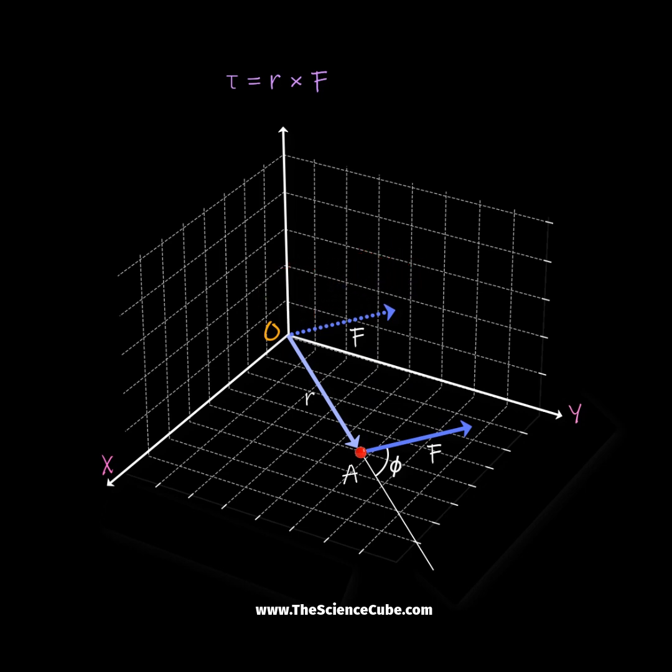We can make use of the right hand rule by sweeping the fingers of the right hand from R, the first vector in this formation, towards vector F, the second vector. When you do this, the thumb gives the direction of the torque.